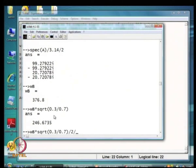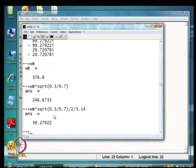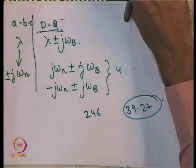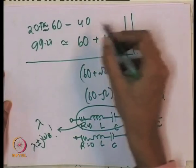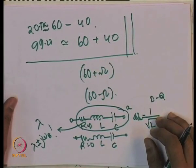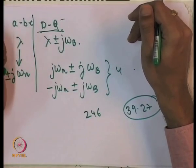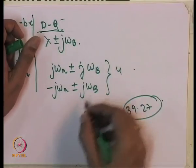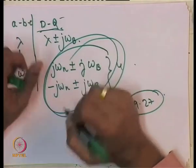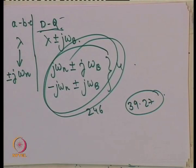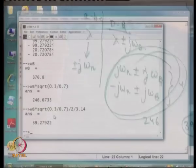Taking 246 radian per second and dividing by 2*pi gives a frequency of about 39.27 hertz. So the four eigenvalues obtained by the D-Q reference frame analysis correspond to 60 ± 39.27 hertz — approximately 20.73 and 99.27 hertz. This explains the eigenvalues seen on screen. If you have a series-compensated network, you do get oscillatory eigenvalues and interestingly some of them are sub-synchronous.